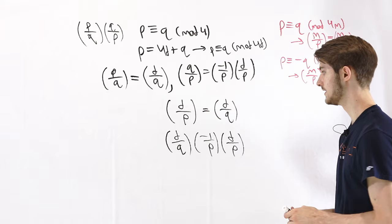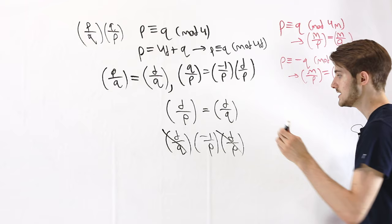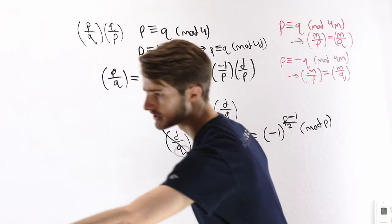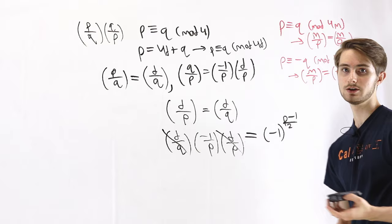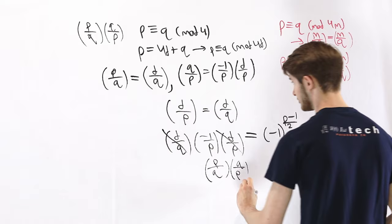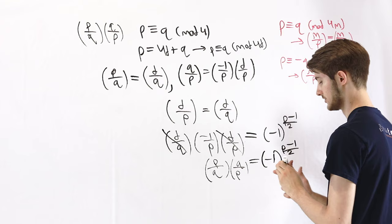By Euler's criterion, (−1/p) ≡ (−1)^((p−1)/2) mod p. Since both sides are ±1, the congruence is an equality. Therefore, for the case p ≡ q mod 4, we have (p/q)·(q/p) = (−1)^((p−1)/2). That is our first result for quadratic reciprocity.